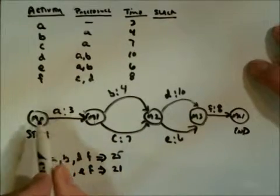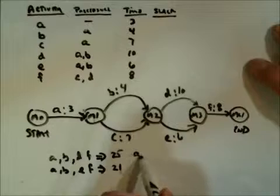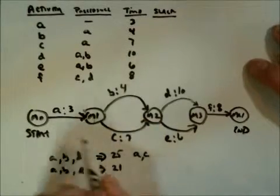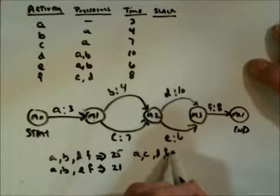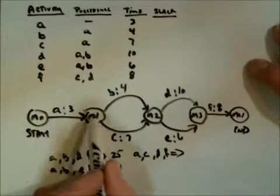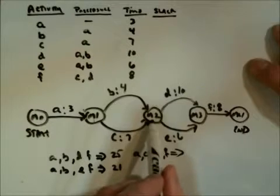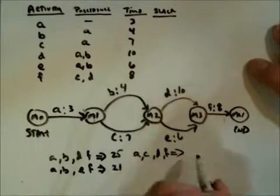Going the other direction down below here, I could go A to C, to D, and then F would be 3. 7 is 10, 10 is 20, 28.